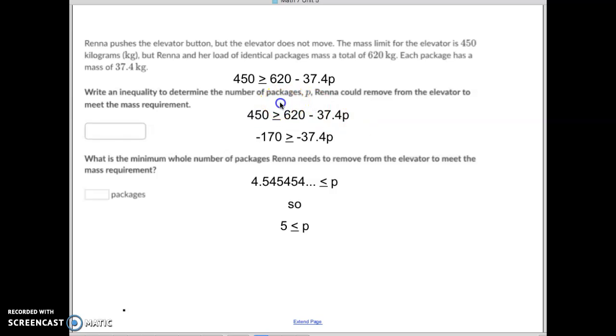We are first going to subtract 620 from both sides, because right now it's a positive 620. 450 at a negative 620, we get negative 170. Then we have to divide by the negative 37.4. Remember, when you divide by a negative, what happens to the inequality sign? It flips. That's right.